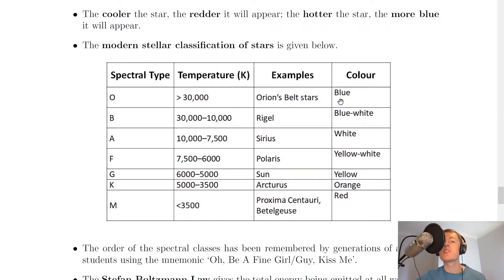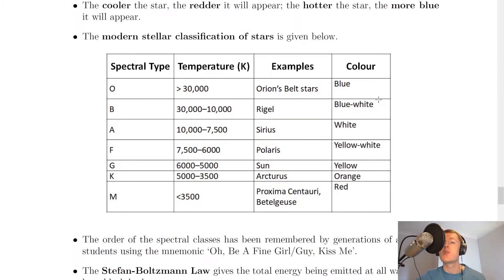Next we have the modern stellar classification of stars. All of the stars of a certain color have been given a spectrotype. So we've got spectrotypes of O, B, A, F, G, K and M and those have certain temperature ranges. For example, stars greater than 30,000 Kelvin have the color blue and an example is Orion's Belt stars.